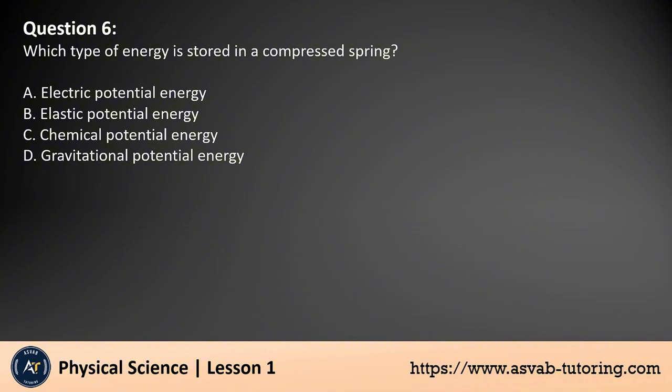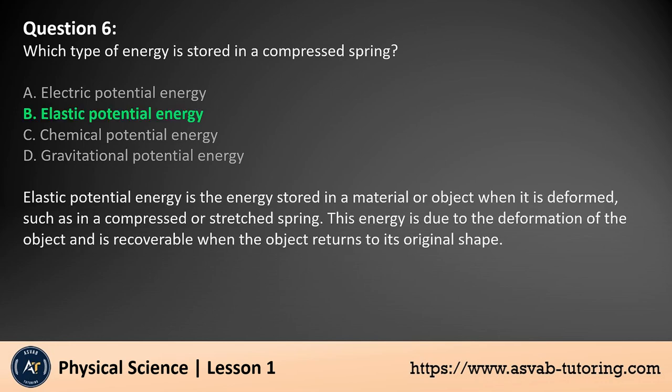Question 6: Which type of energy is stored in a compressed spring? A. Electric potential energy, B. Elastic potential energy, C. Chemical potential energy, D. Gravitational potential energy. The answer is B. Elastic potential energy is the energy stored in a material or object when it is deformed, such as in a compressed or stretched spring. This energy is due to the deformation of the object and is recoverable when the object returns to its original shape.